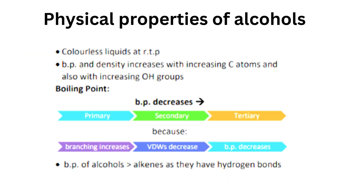Physical properties of alcohols. They are colourless liquids at room temperature and pressure. Boiling point and density increase with increasing carbon atoms and also with increasing OH groups. Boiling point of alcohols is greater than alkenes as they have hydrogen bonds.